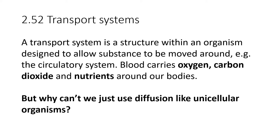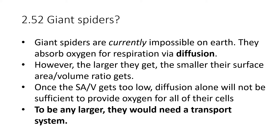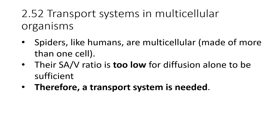But why can't we just use diffusion like unicellular organisms do? Why can't we just absorb everything we need through our skin? To give some context, consider the possibility of giant spiders — on Earth this is currently impossible, thankfully. Spiders absorb their oxygen for respiration via diffusion through holes in their exoskeleton called spiracles. The larger they get, the smaller their surface area to volume ratio becomes. Eventually, if they were too large, diffusion alone wouldn't be enough to supply all of their body cells with oxygen — some cells would die. To be any larger, they would need to develop a transport system like the human circulatory system. So for multicellular animals with a surface area to volume ratio too low for diffusion alone to be sufficient, we need a transport system, otherwise many body cells would never get oxygen and we would die.